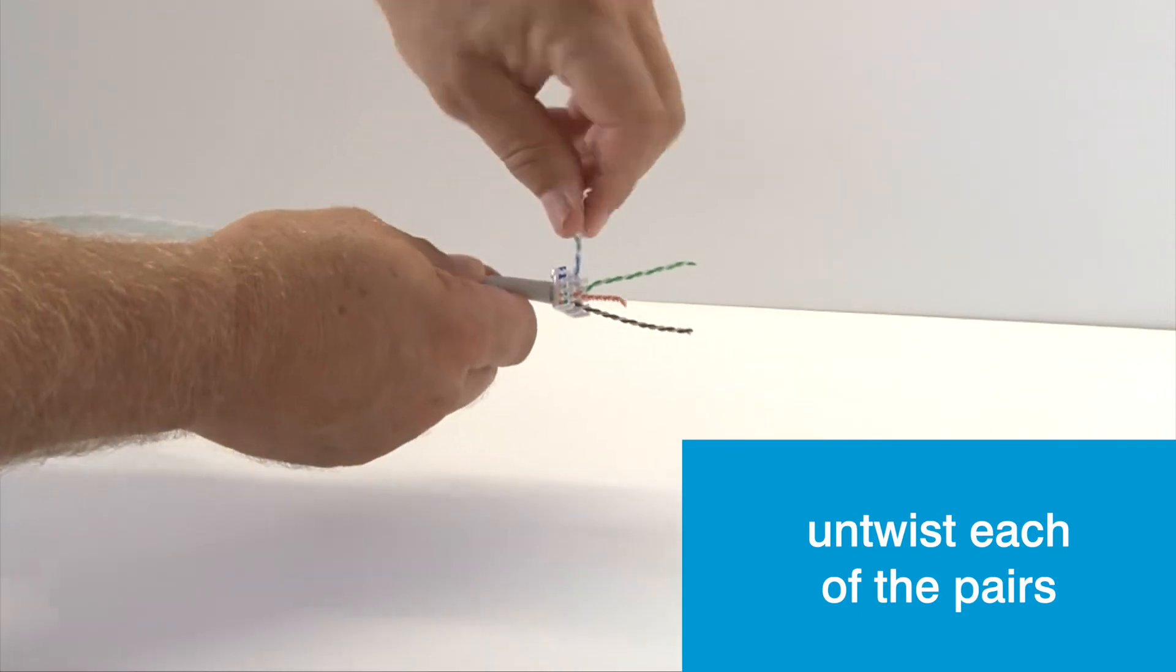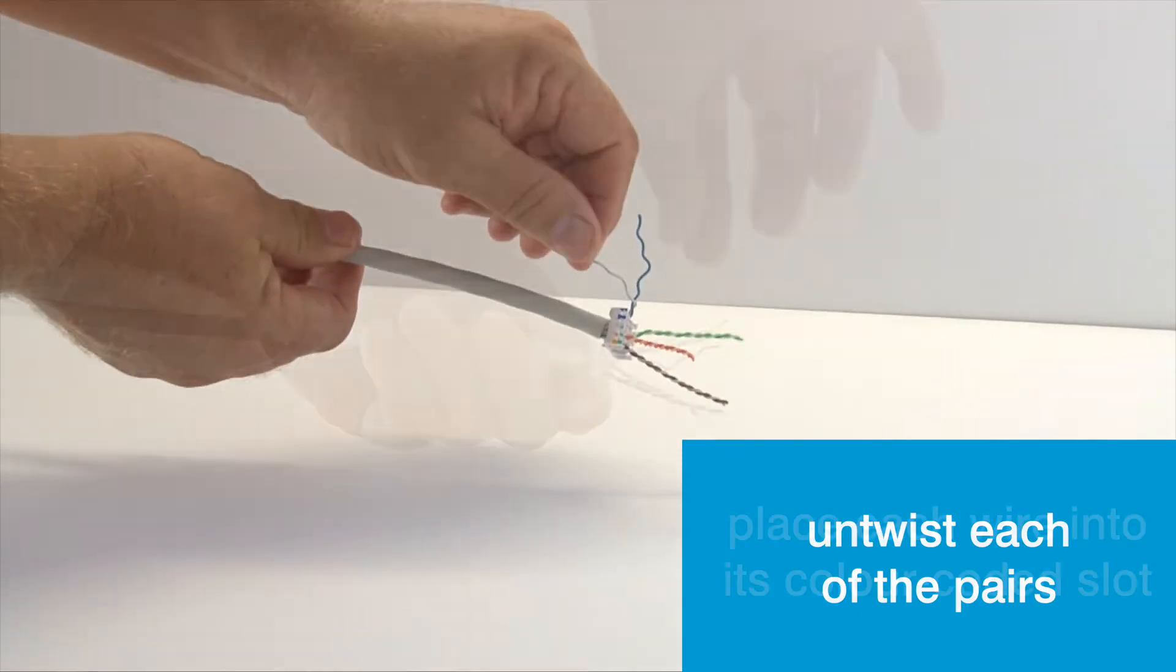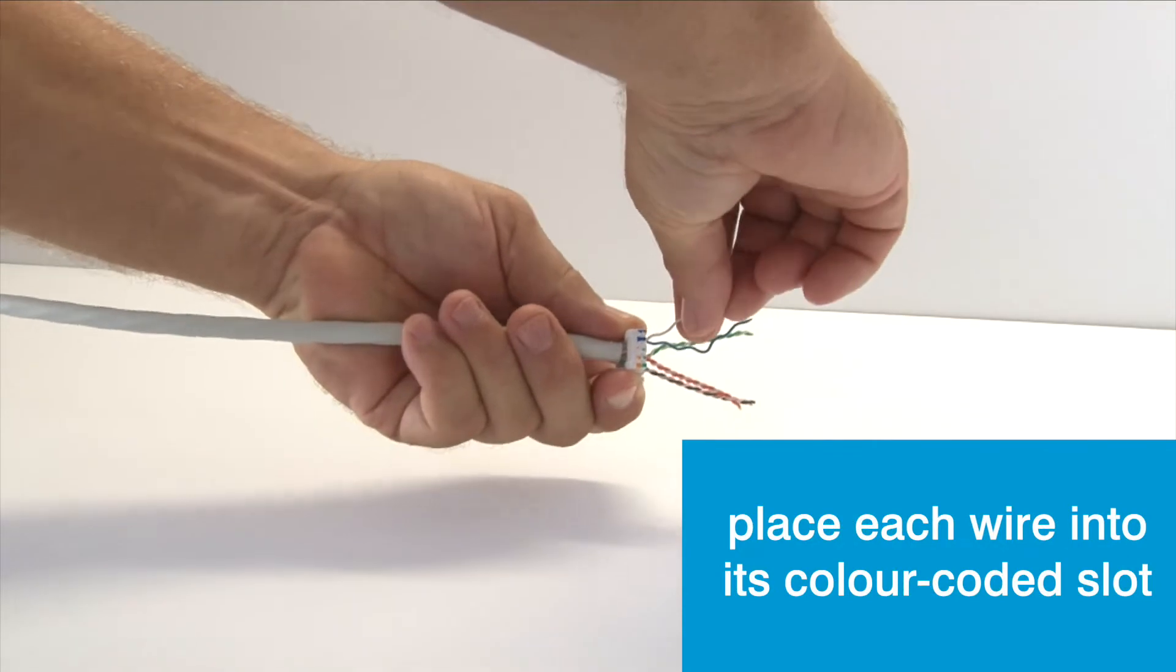Untwist the pairs and then secure each wire into its correct color-coded slot.